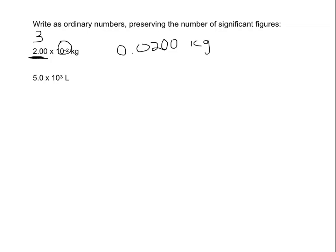And 5.0 times 10 to the third — look right here, this is two significant figures. I want to see two significant figures in my answer. 10 to the third is like multiplying by 1,000, so we move the decimal point to the right. I do not want to put a decimal point at the end, because that would make it four significant figures. I'm going to put a bar over the zero in the hundreds place — that gives me my two significant figures, and the other two are just placeholders so we can have all the digits in their proper place value.